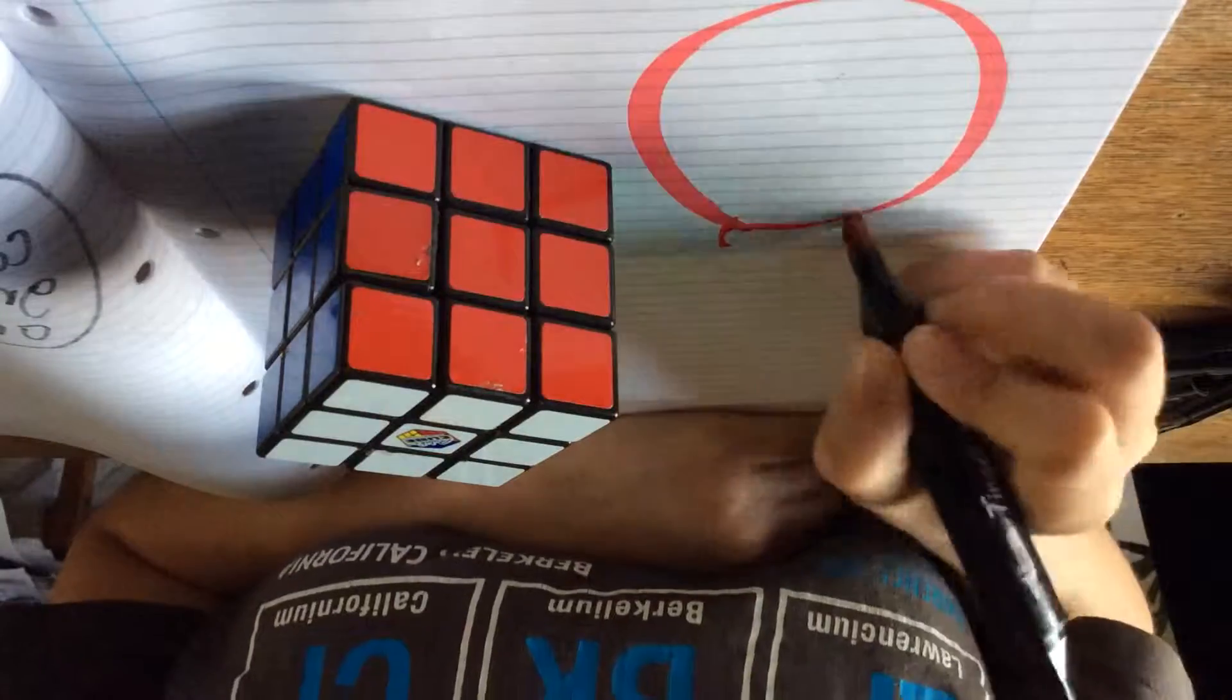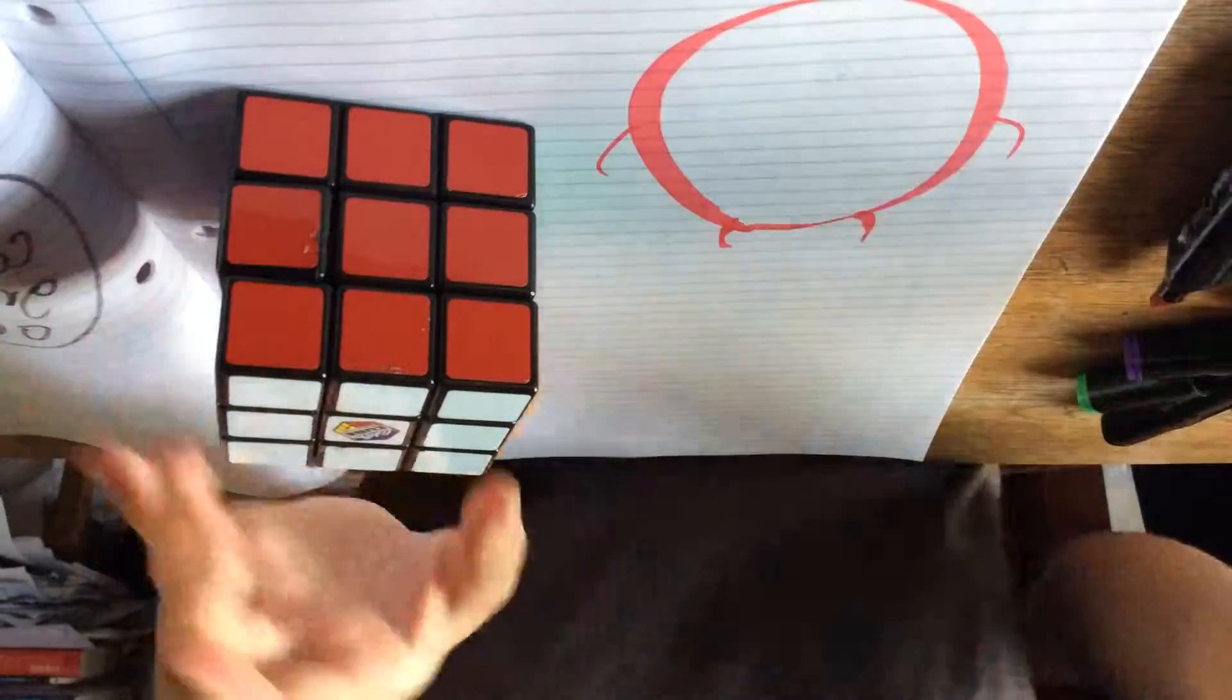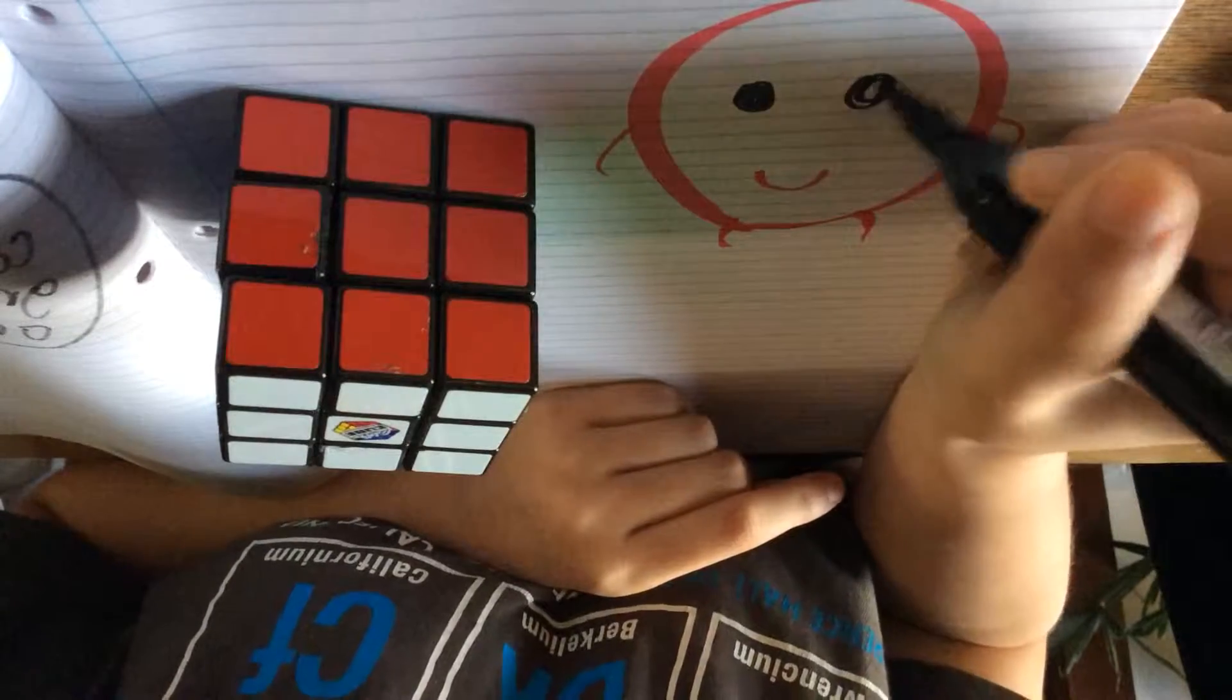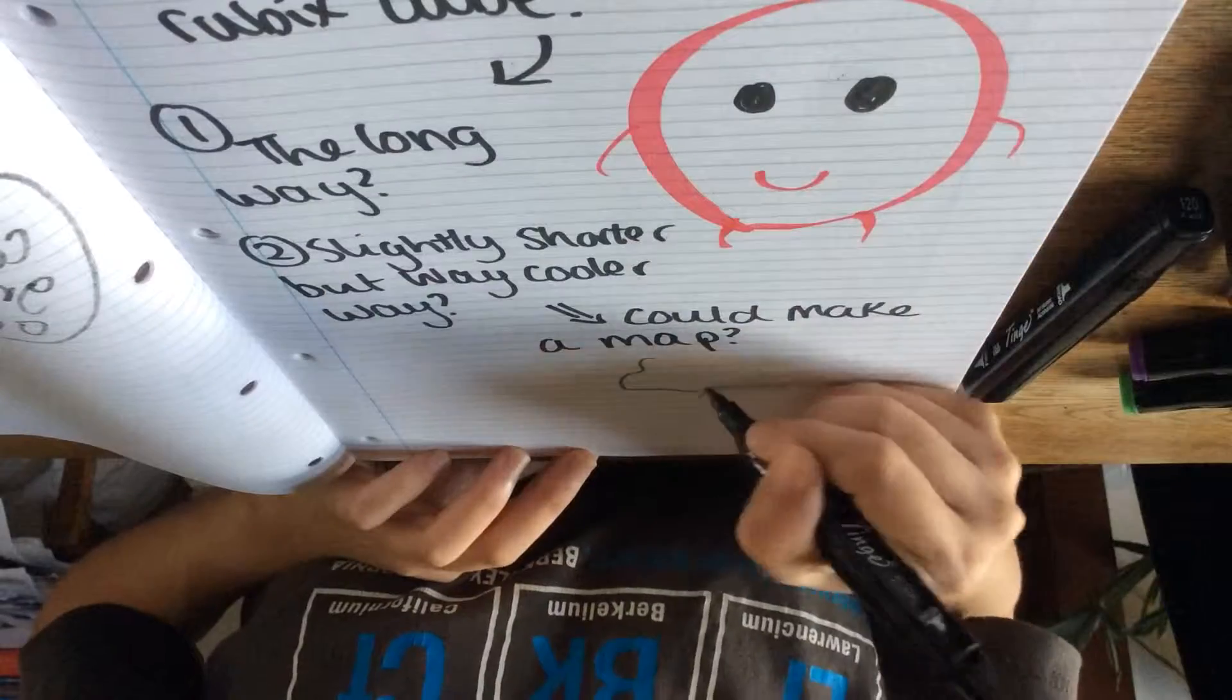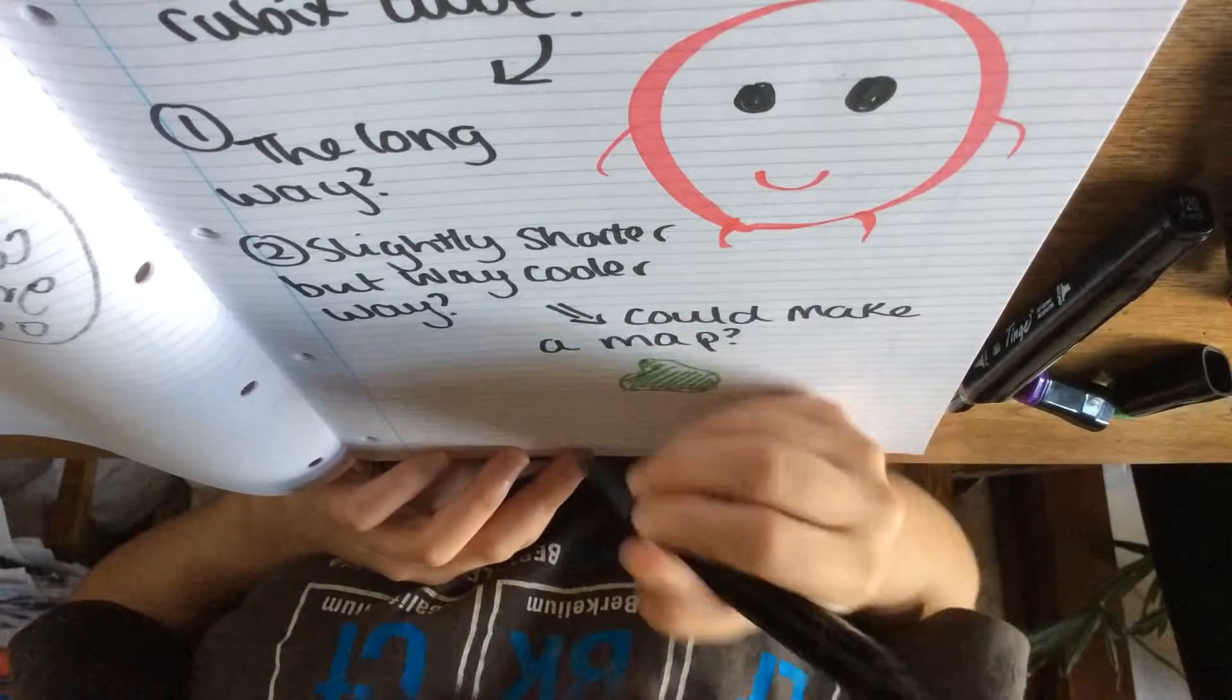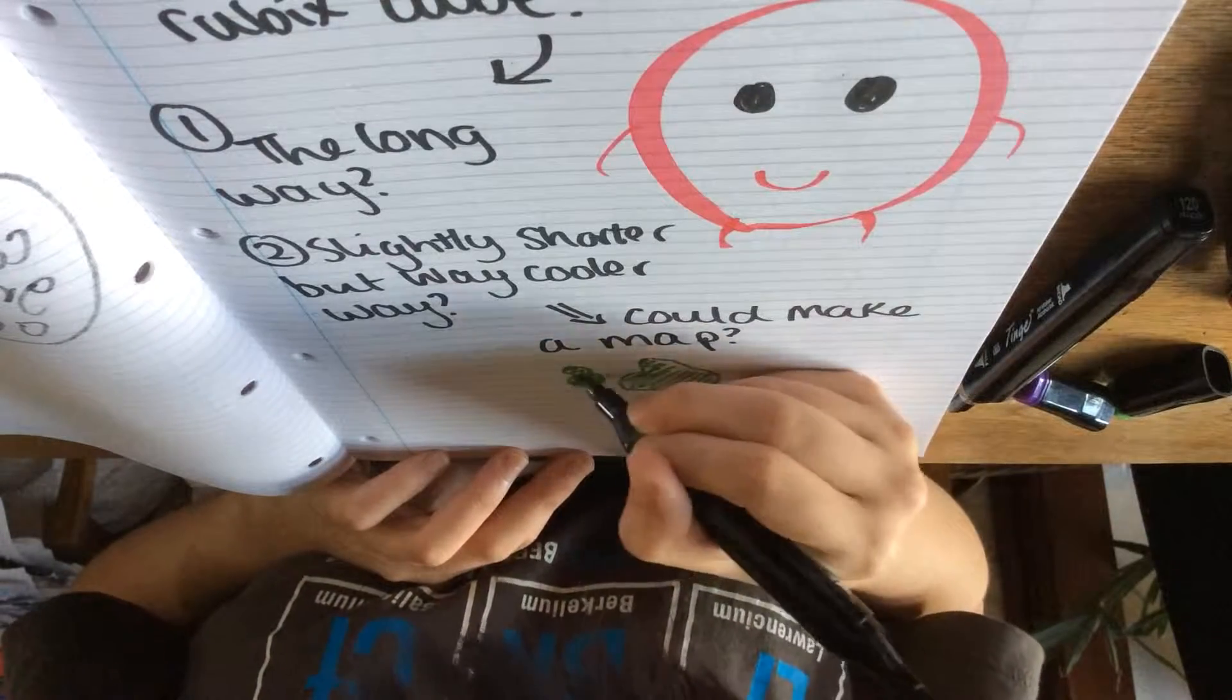So say for instance you wanted to get back to your starting position, but you didn't know where to start. What would you do? Well, I guess you could go down the messy route and try and scramble up the Rubik's Cube in an indefinite amount of ways until you got back to your original starting position. But that would be quite long and quite tedious and no fun.